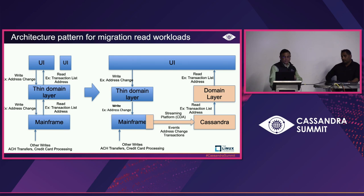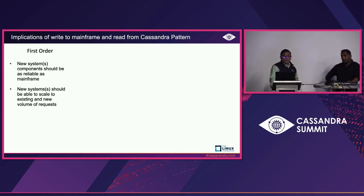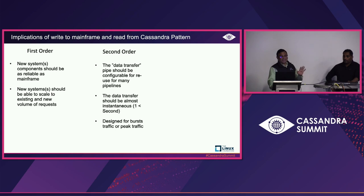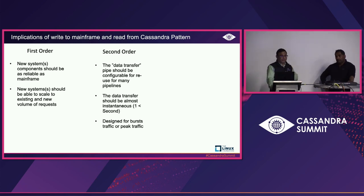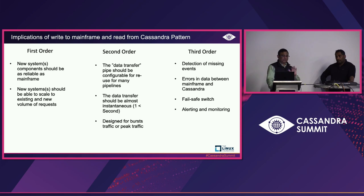There are numerous problems we encountered — we're listing only some of them here. The new system, the pipe, and Cassandra all have to be reliable and have to scale. We'll go into three of them in the interest of time. The first one is data transfer latency.